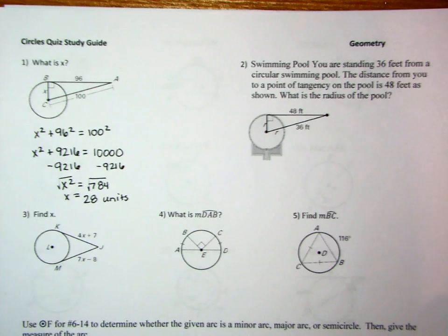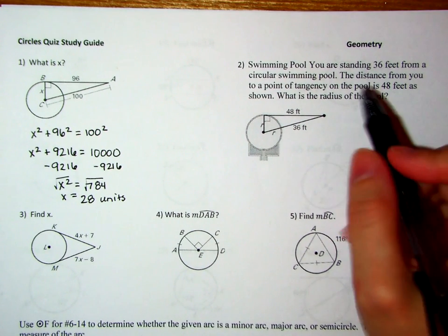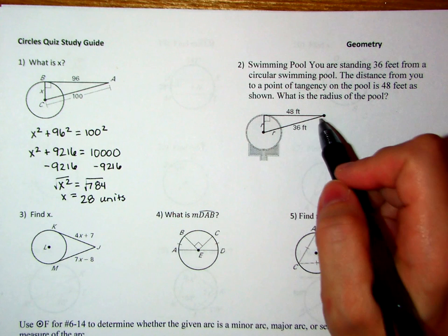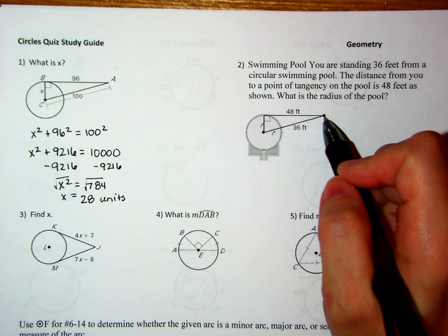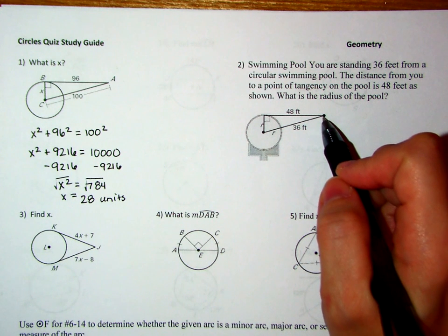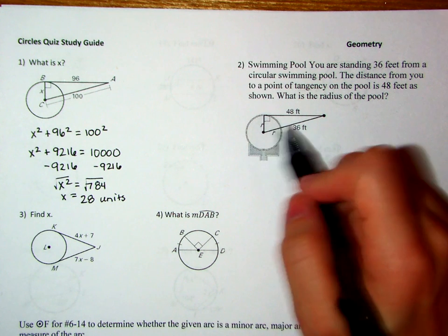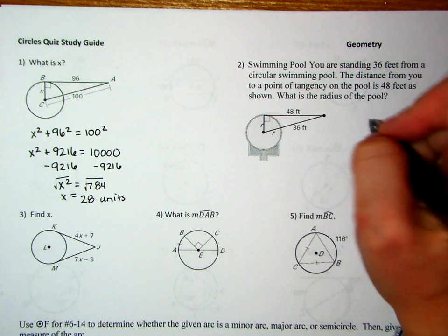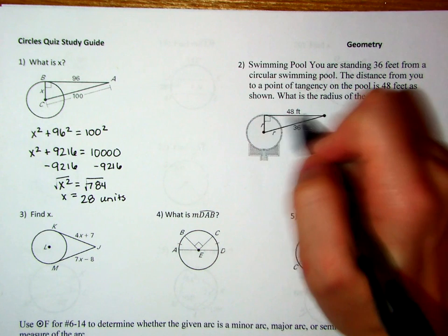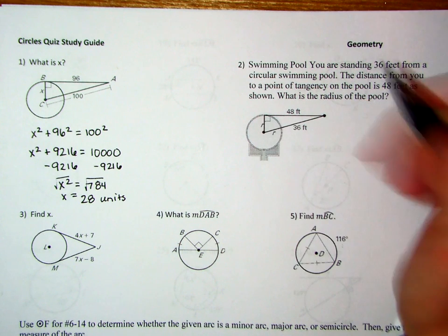On number 2, it says that we have a swimming pool, and we're standing 36 feet away from a circular swimming pool, so that means we're right here. The distance from the point of tangency to the pool is 48 feet, as shown. And so what we're trying to find is the radius. And again, remember, this is the idea of Pythagorean theorem. If the radius and the tangent line come together, they form a right angle.